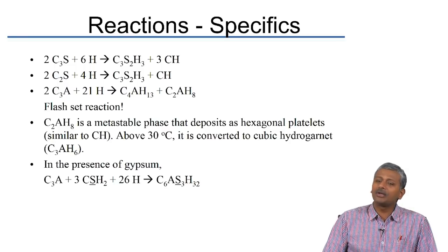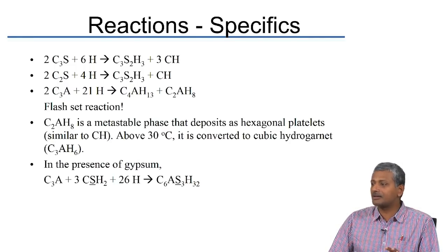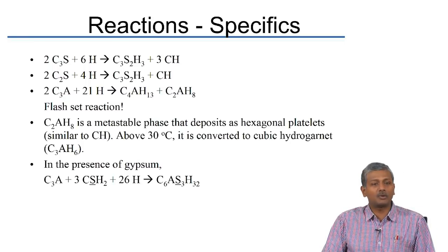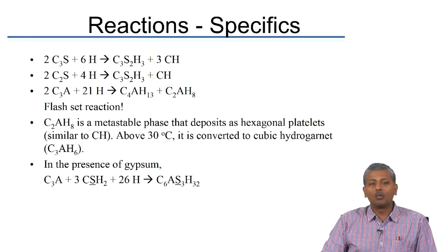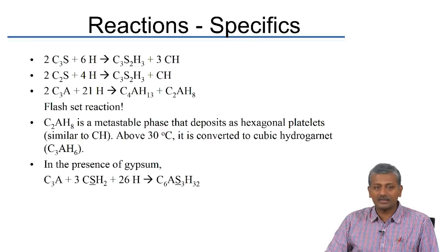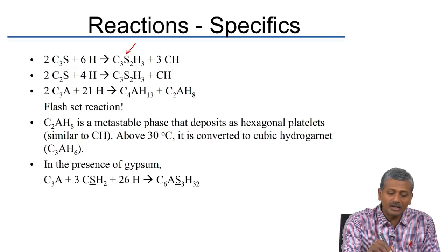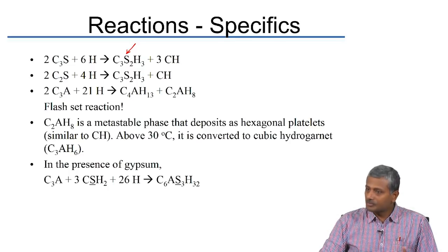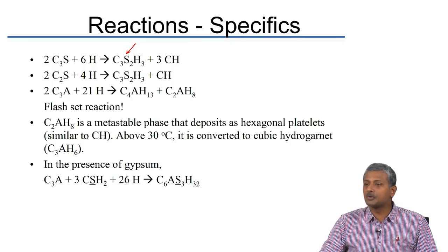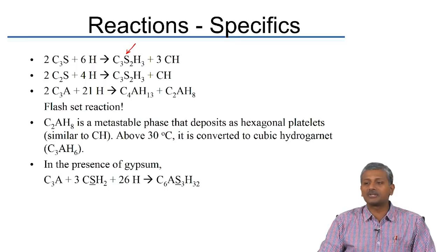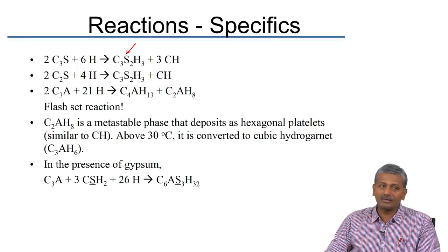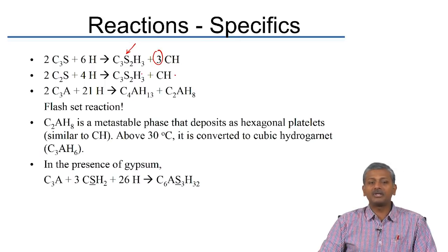The reactions shown are approximate, written for stoichiometric balance. 2C3S + 6H₂O → C3S2H3 + 3CH. This suggests a calcium-to-silica ratio of 1.5, though this is an approximation. Similarly, C2S reacts with water to form CSH and calcium hydroxide. From these reactions, you can see that 3 times as much calcium hydroxide is formed with C3S as with C2S.